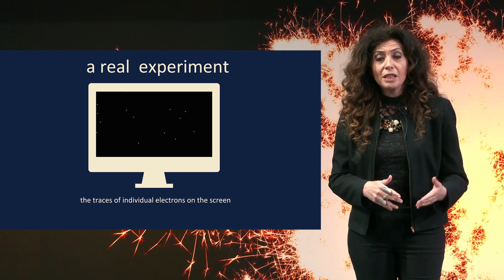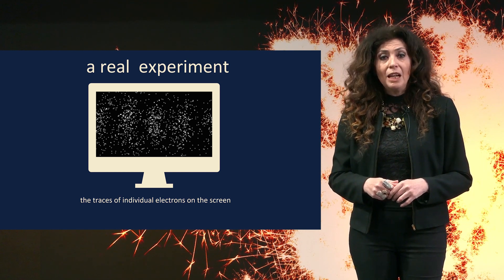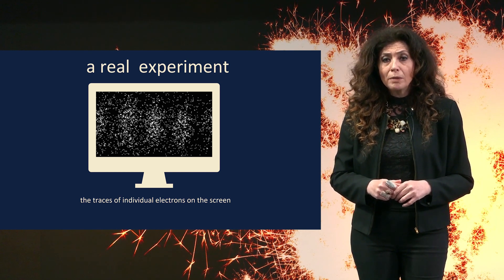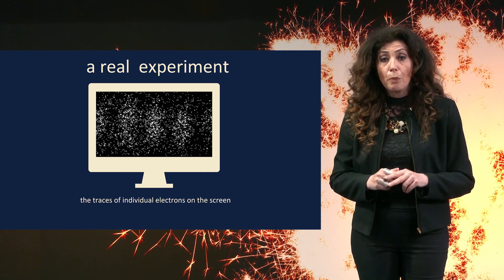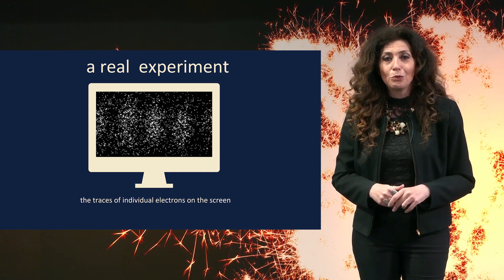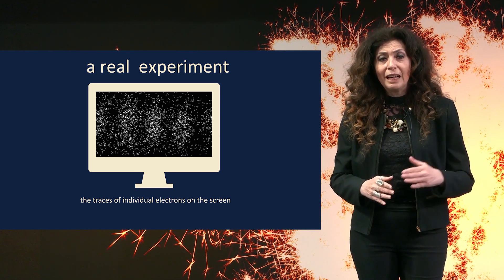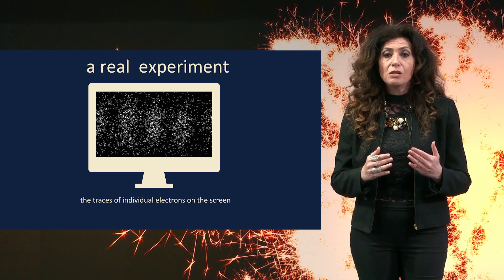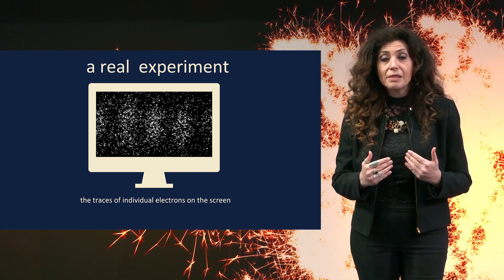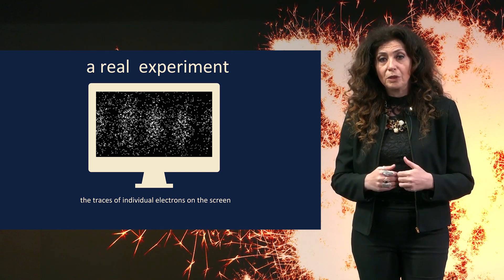And here is real experimental data. Electrons arriving one by one after passing through both slits and slowly forming an interference pattern. This pattern of alternating lighter and darker spots is what reveals the electron's ability to interfere with itself. How can we say that the electron is real if we cannot even say it has a well-defined position — in which sense does it exist?